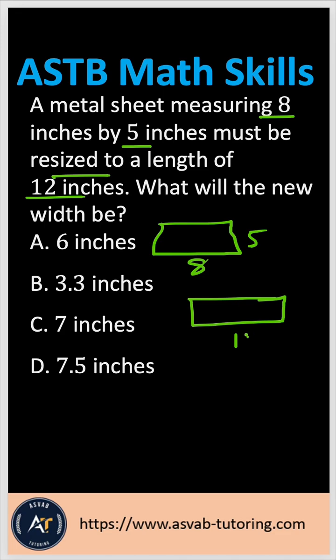So if the length is 12, what will be this width? It's not like finding the ratio. The area has to be the same.